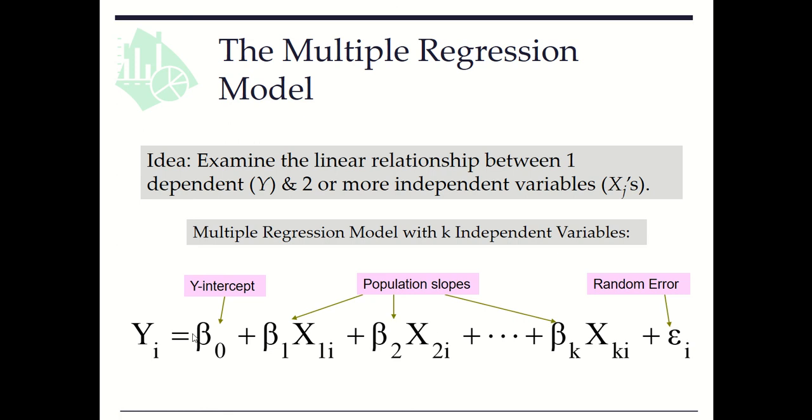So this is the assumed relationship for data in the population. We don't know beta zero through beta k. We try to estimate them.